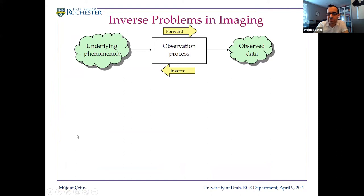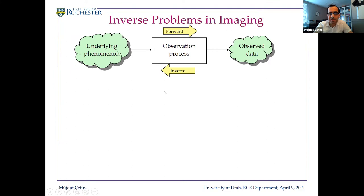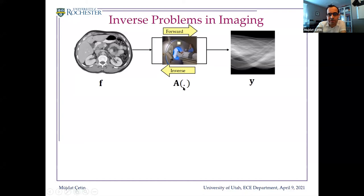You can view all computational imaging problems mathematically as inverse problems. Inverse problems deal with situations where you are interested in some underlying phenomenon that you don't get to measure directly. You measure it through an observation process involving a model of all the physics, geometry, and statistical models. The inverse problem is to go from the observed data to the underlying phenomenon. In computed tomography, for example, the underlying phenomenon is an image, the data is sinogram data, and the goal is to invert and recover the image. This process is modeled mathematically as a linear or nonlinear operation, so the problem is to estimate f from y.